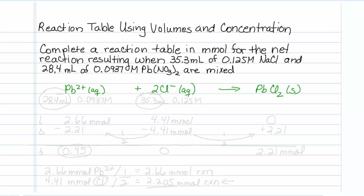When I do these problems, I like to write the amounts underneath each species because it helps me keep track of things. So underneath the lead, I will write 28.4 mL and 0.0937 molar. Underneath the chloride, I will write 35.3 mL and 0.125 molar.